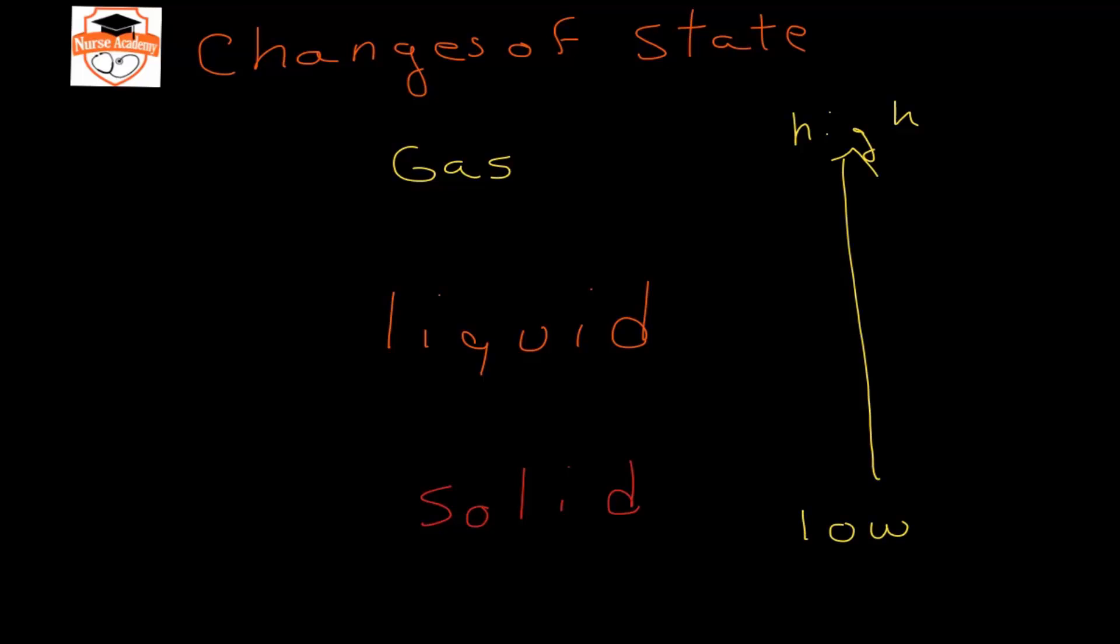The transitions between solid, liquid, and gas have different names. If I'm going from a solid to a liquid, that one's melting. If we go straight from a solid to a gas, however, that is called sublimation.